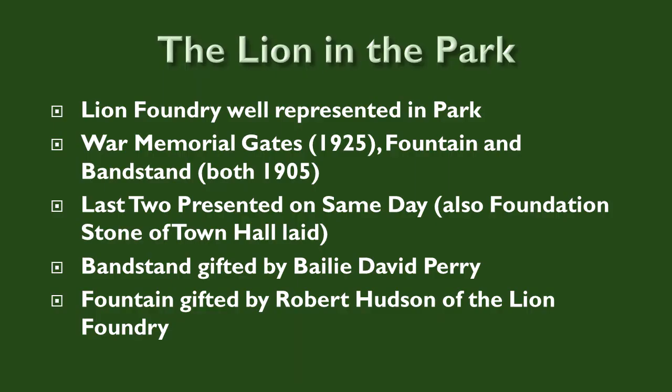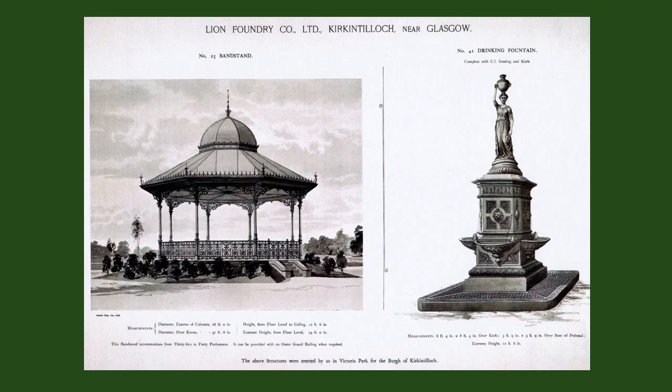Although the marble for the war memorial came from New Zealand, the cast iron gates were manufactured locally at the Lion Foundry. In this final part of the talk, we will examine the other Lion Foundry products that can be seen in the Peel Park. This page from an early 20th century catalogue of Lion Foundry products shows the number 25 bandstand and the number 41 drinking fountain that were selected for display in the Peel in 1905.